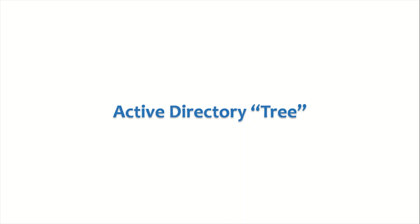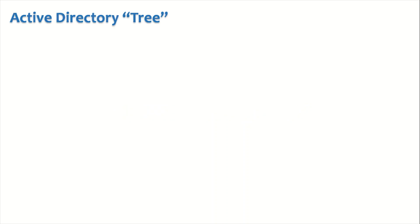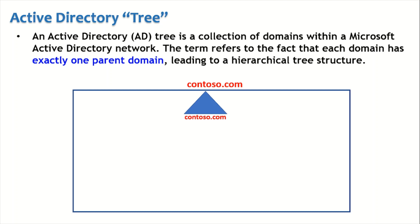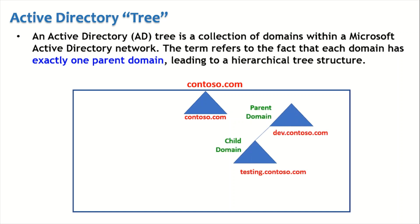Let us understand what an Active Directory tree is all about. An Active Directory tree is a collection of domains within a Microsoft Active Directory network. The term tree refers to the fact that each domain has exactly one parent domain, leading to a hierarchical tree structure — there is a parent-child relationship. This is our forest and this is a forest root domain contoso.com. We can have two domains such as dev.contoso.com and testing.contoso.com forming this tree.